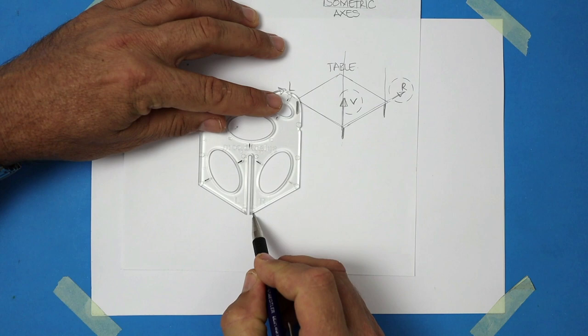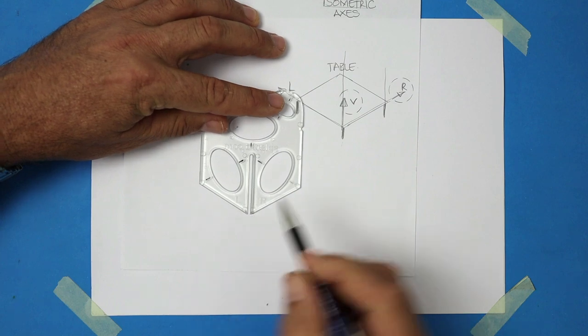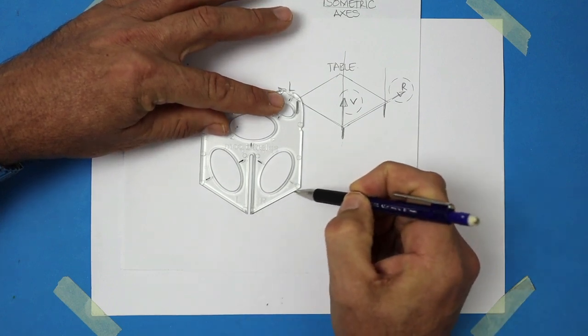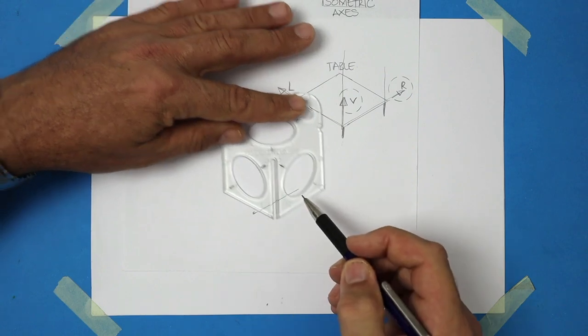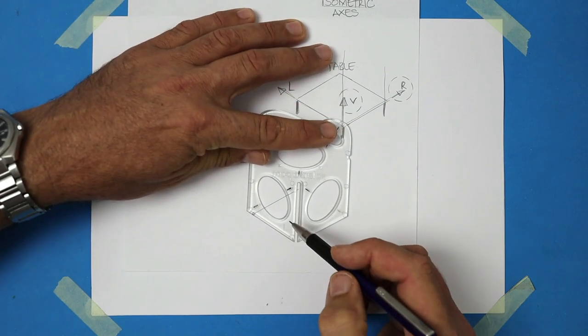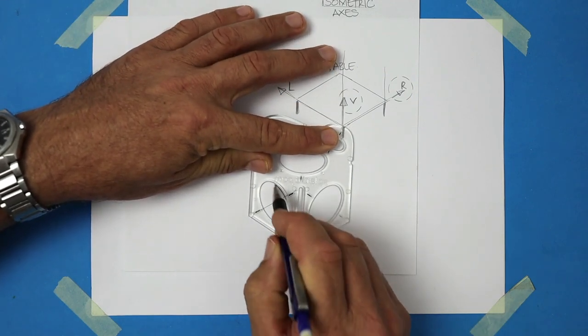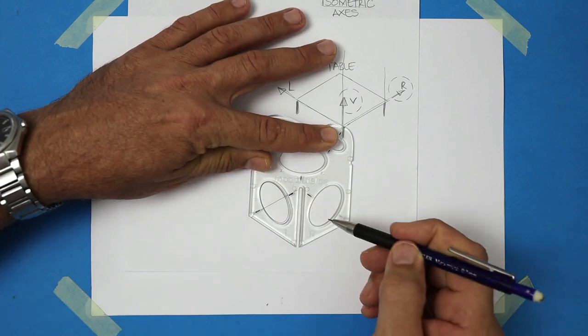We're going to practice drawing a cylinder together. So grab some scrap paper and draw a line on the right splat or isometric angle. Find those two little marks and line them up to that line that you drew, your axis. Draw a full ellipse. Great.